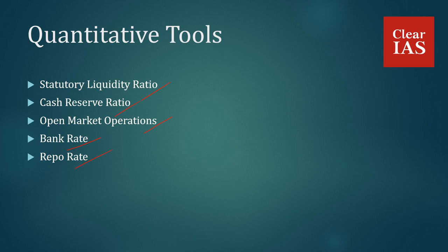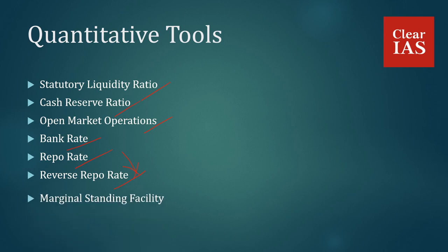Repo rate. Reverse repo rate — reverse repo rate is usually 1% less than the repo rate. Marginal Standing Facility, i.e. MSF — MSF is usually 1% greater than the repo rate.